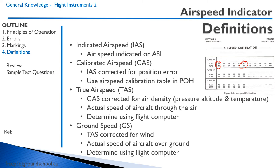True airspeed is the actual speed of the aircraft going through the parcel of air. It is the calibrated airspeed corrected for air density, which is pressure altitude and temperature. We determine true airspeed using a flight computer — you will learn how to do this in your navigation lesson. As a rough estimate, true airspeed is indicated airspeed plus 2% per thousand feet. So at 10,000 feet doing 100 knots, that's 20%, giving a true airspeed of roughly 120 knots.